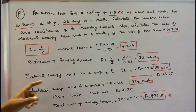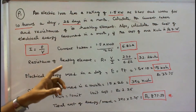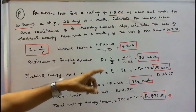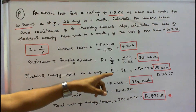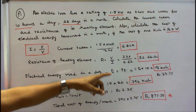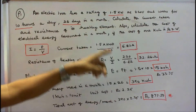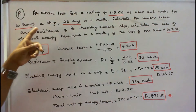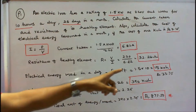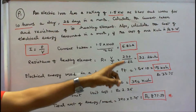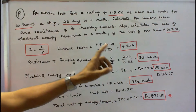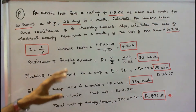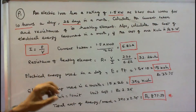The third part is electrical energy used in a day. Energy E is equal to power into time. We know P is given as 1.5 kW and time is 10 hours a day. So 1.5 into 10 is equal to 15 kWh. That is the electrical energy used in a day.